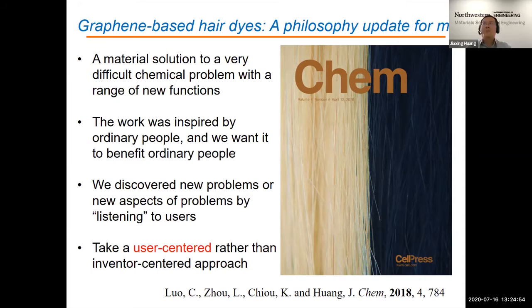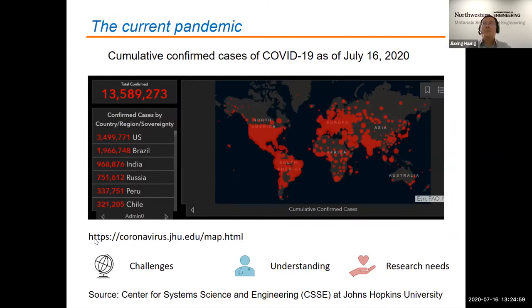Many of us were very shocked at the end of January when we first learned about the outbreak in Wuhan, China, and especially by the Chinese government's decision to shut down the entire city. My group had quite a few students from Wuhan, and some of them were actually there at the time. Fortunately they were all okay, and their families were okay. But it puzzled us — why did they decide to take such a drastic measure? How bad is this?